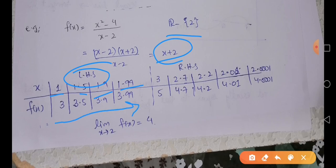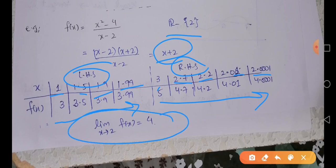When x approaches 2 from the left hand side, the answer approaches 4. Similarly, approaching from the right hand side with values 3, 2.7, 2.2, 2.01, 2.0001 — very close to 2 but not equal — the function values also get closer and closer to 4. Therefore, lim(x→2) f(x) = 4. This illustrates the beauty of limits: whether or not we can evaluate a function at a point, we can always find its limiting value.